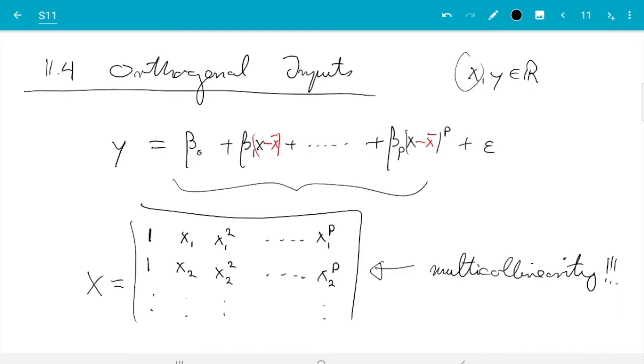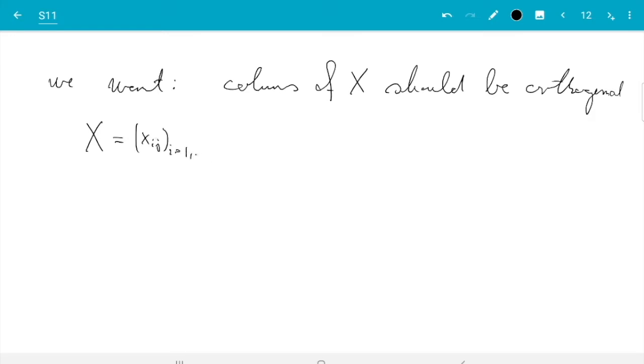So that is the first version. But then there is a more systematic way of doing that and getting a better result, namely, what we really want is for the columns of X to be orthogonal. What does this mean? That means, so if we say X is xᵢⱼ, where i ranges from 1 to n, and j ranges from 0 to p.